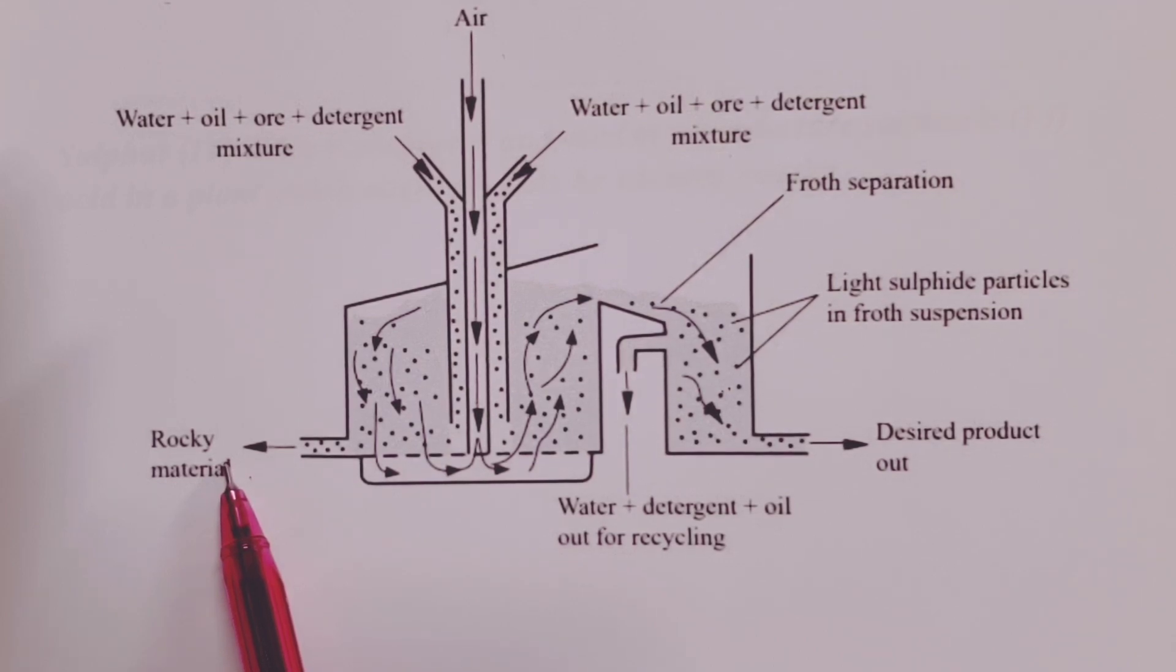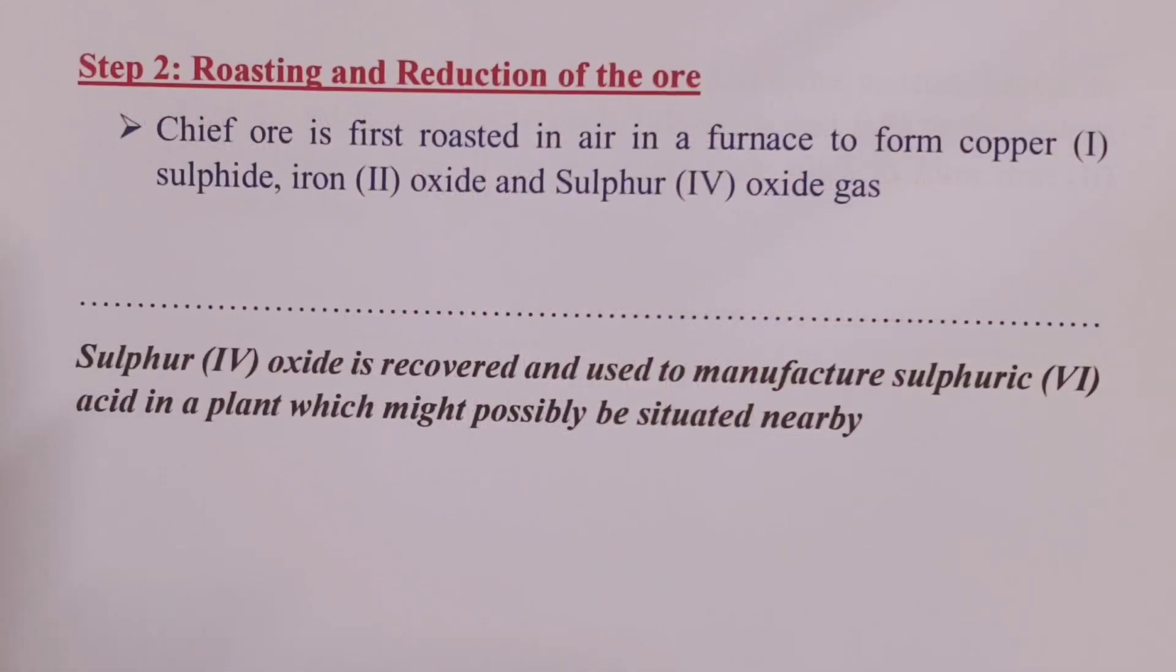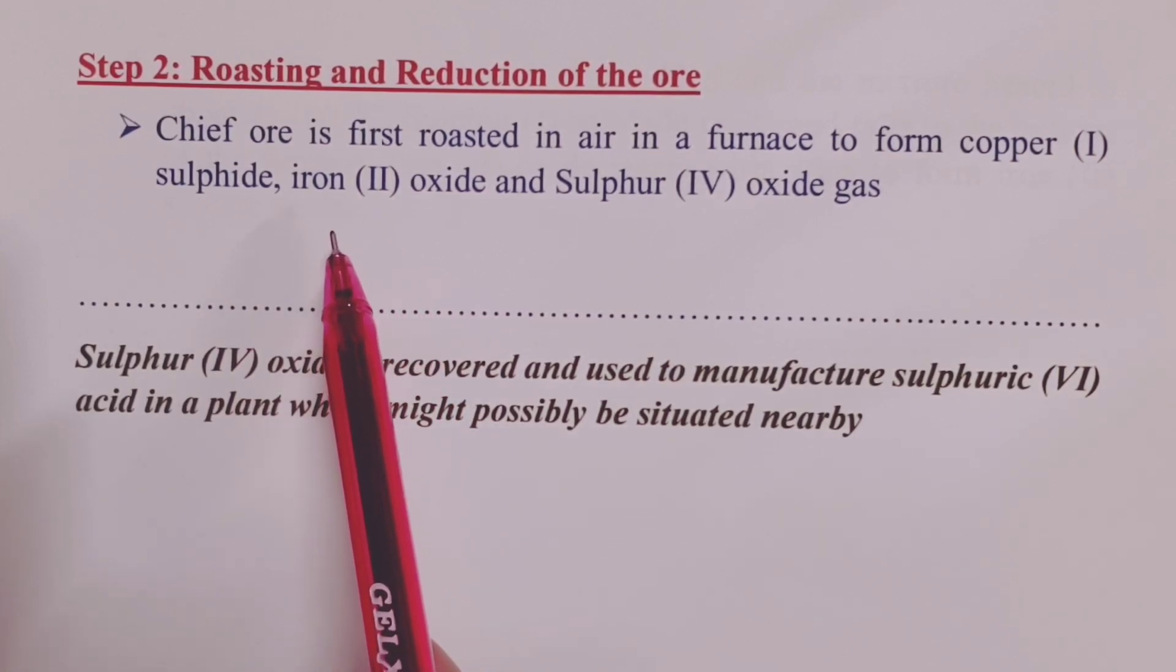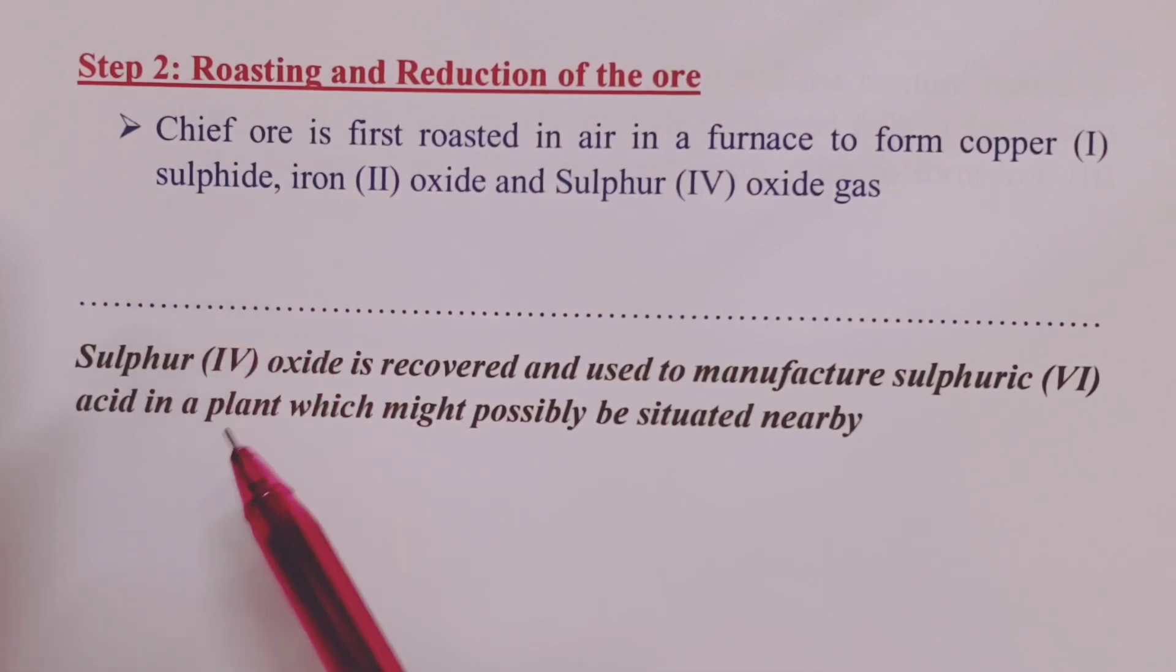We now move to stage 2 where we do roasting and finally reduction of the ore. In step 2, our ore is roasted in air, of course in a furnace, where we shall form three substances. The ore will form copper-1-sulfide, iron-2-oxide, and sulfur-4-oxide during the roasting.